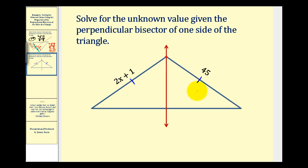So from here it's pretty straightforward, 2x plus 1 must be equal to 45. So we'll subtract 1 on both sides. Give us 2x equals 44. Divide both sides by 2, so we have x equals 44 divided by 2 is equal to 22.